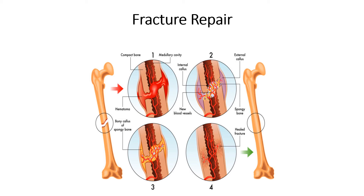Phase 3 — Bony Callus Formation: پہلے soft callus نے clotted blood کو replace کیا تھا، اب hard bony callus soft callus کو replace کر دیتی ہے۔ Osteoblast cells اس fracture site پر continuously migrate کرتے ہیں، rapidly multiply کرتے ہیں اور soft callus کو bony callus میں convert کر دیتے ہیں۔ Bone formation injury کے 3-4 weeks بعد start ہوتی ہے اور continue رہتی ہے جب تک bone کے دونوں broken ends کے درمیان firm union نہ بن جائے۔